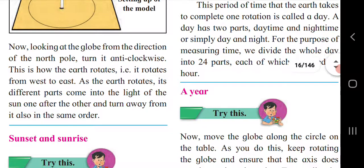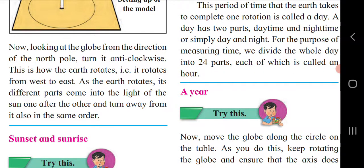Now look at the globe from the direction of the North Pole and turn it anti-clockwise — this is how the earth rotates, from west to east. As the earth rotates, its different parts come into the light of the sun one after the other, and turn away from it in the same order. The movement of the earth around its axis is called rotation. The part of the earth facing the sun has day, while the other part has night.